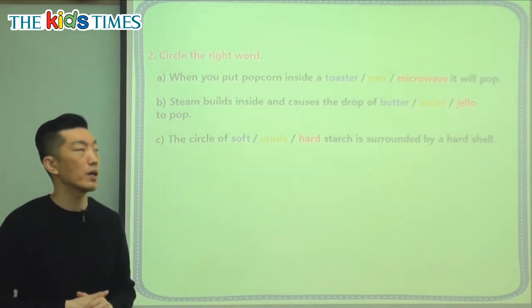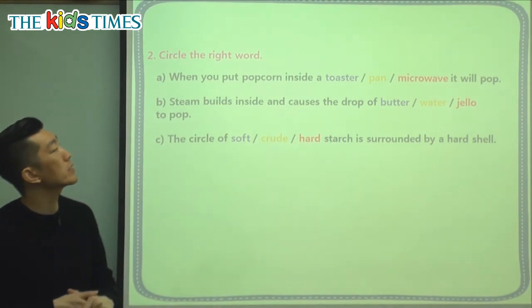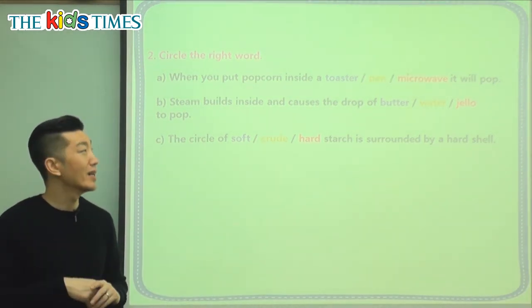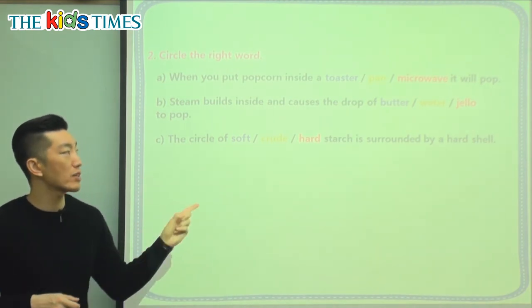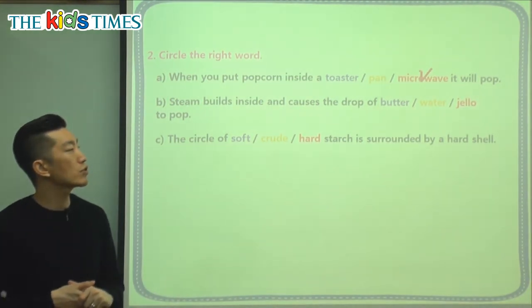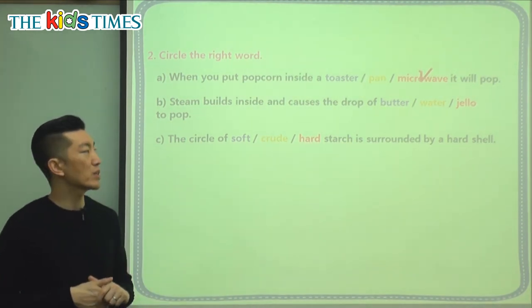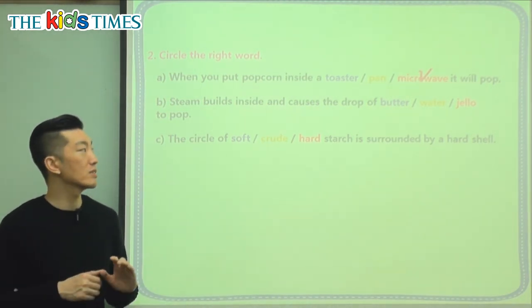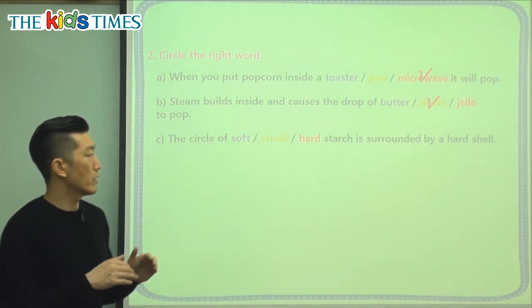Just like the name — pop and corn — it's corn that is popped. Let's circle the correct word and finish our exercise for today. When you put popcorn inside a toaster, a pan, or a microwave — it will pop. A toaster is usually where we put bread. A pan is where we usually cook things. If you put popcorn on a pan, the popcorn will fly everywhere. So usually we put them inside a microwave. The second question: steam builds inside and causes the drop of butter, water, or jello to pop. Butter is what people usually put on top of their popcorn, but not inside. Jello is a dessert with nothing to do with popcorn. So the correct answer is the water inside each individual kernel.